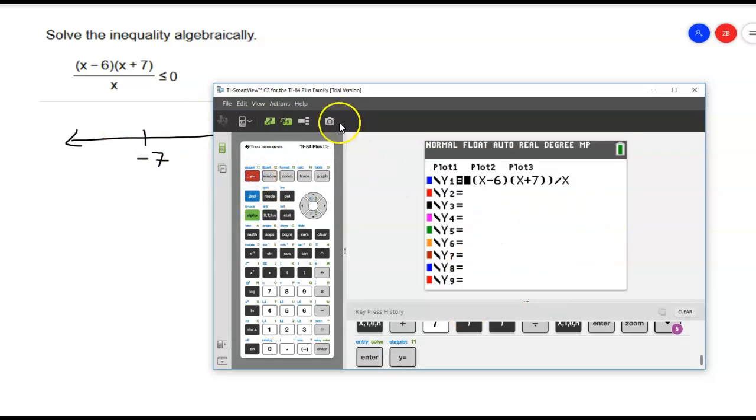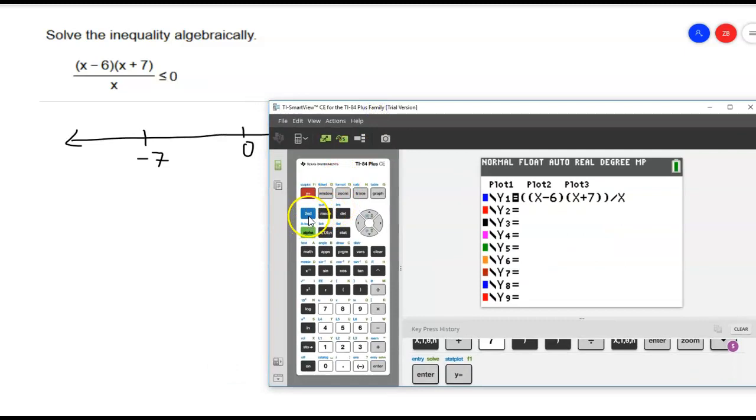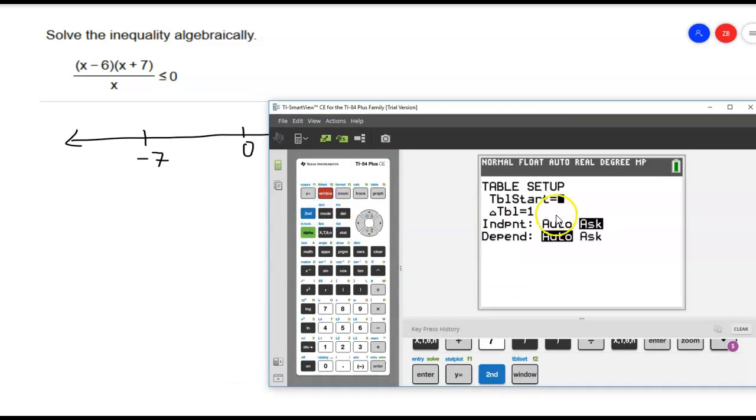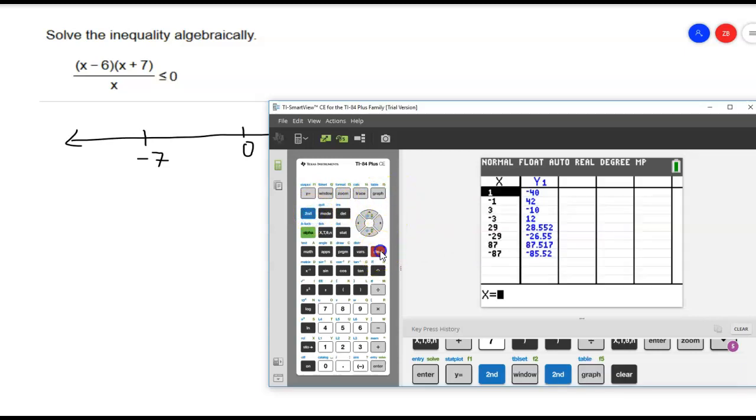So I already have this in my y1. And I'm going to go to second window, which makes sure this independent is on ask and the dependent is on auto. That's my table setup. And then I'm going to go to my table, which is second graph.